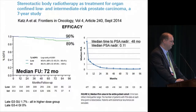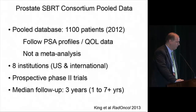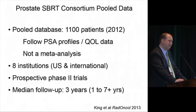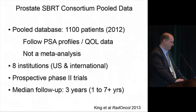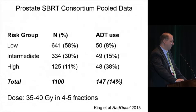The largest published experience is from Dr. Katz in Long Island, with a median follow-up of seven years combining low and intermediate risk disease. Most patients got 7.25 gray times 5, with a smaller portion getting 7 gray times 5. Out to 96 months, there is 96% biochemical control in the low-risk group and 89% in the intermediate-risk group. PSA nadirs were quite low, in the vicinity of a typical brachytherapy series at about 0.1.